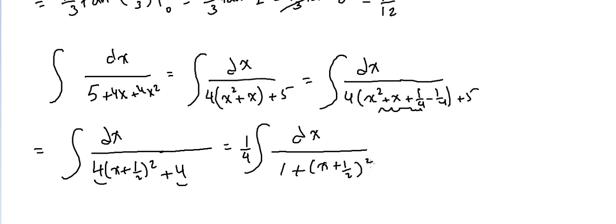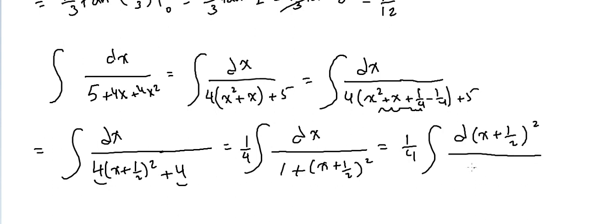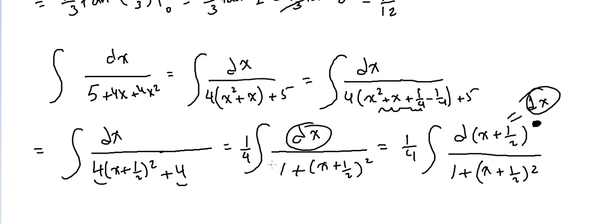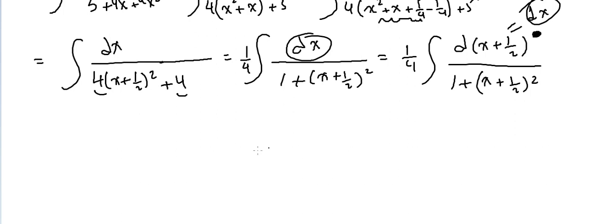Let u = x + 1/2. Then du = dx since the derivative of (x + 1/2) is 1. The integral becomes (1/4)·integral of du over (1 + u²), which equals (1/4)·tangent inverse of u, giving (1/4)·tangent inverse(x + 1/2) plus C.